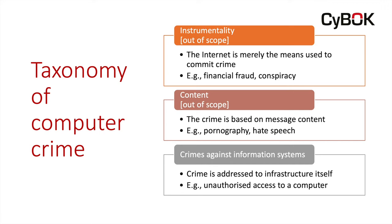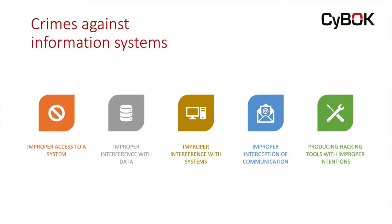Mostly what I've used this section for is to explain a bit more about crimes against information systems, and as you can see, they fall into five categories. Improper access to a system — usually synonymous with hacking, the idea of breaking into a computing system without authorization. Improper interference with data — rearranging, deleting, messing about with the contents of a computer. Improper interference with systems — anything that would decrease service viability, denial of service attacks. Improper interception of communication — we've already talked about that. And producing hacking tools with improper intentions.